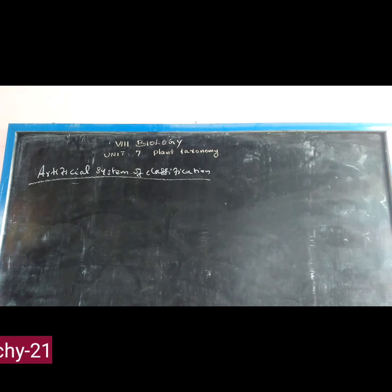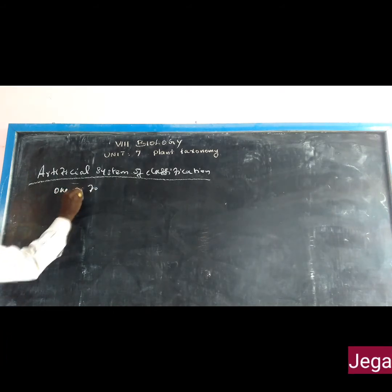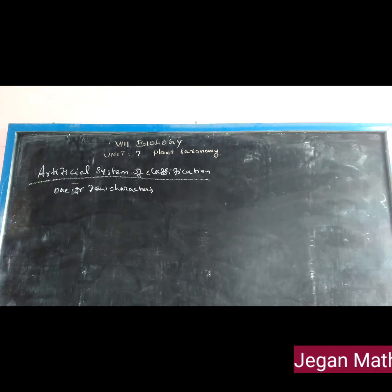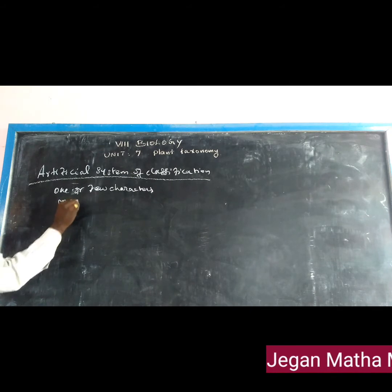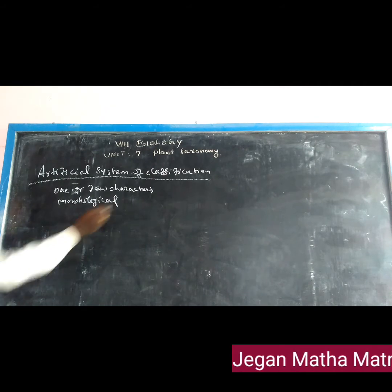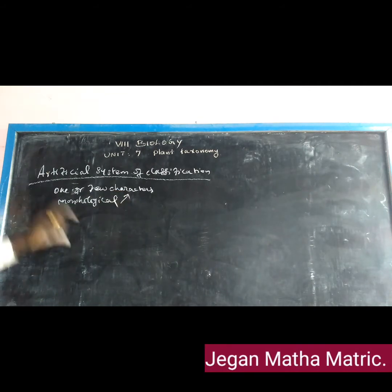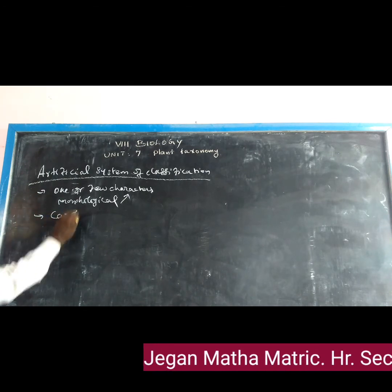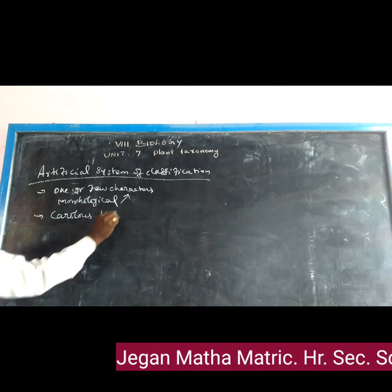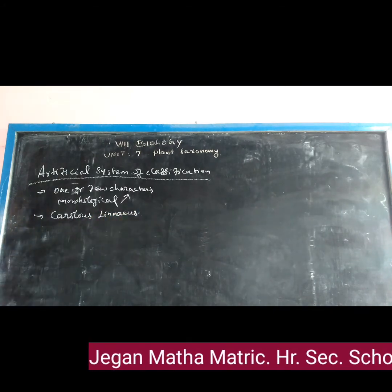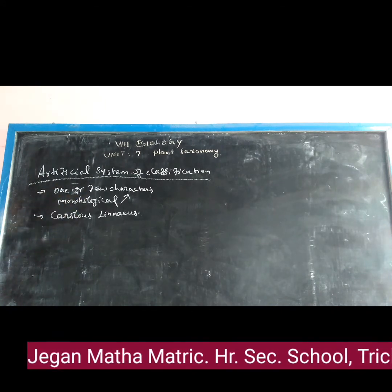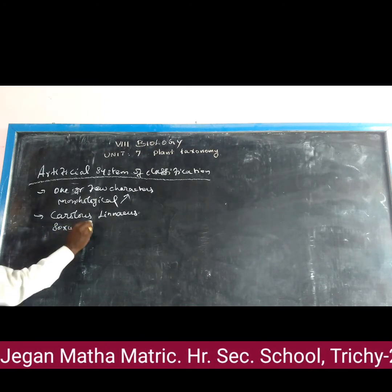In the Artificial System of Classification, plants are classified based upon one or a few morphological characters only. Morphological characters refer to only the external appearance of the plant. This system was proposed by Carolus Linnaeus. It is also called the Sexual System of Classification.